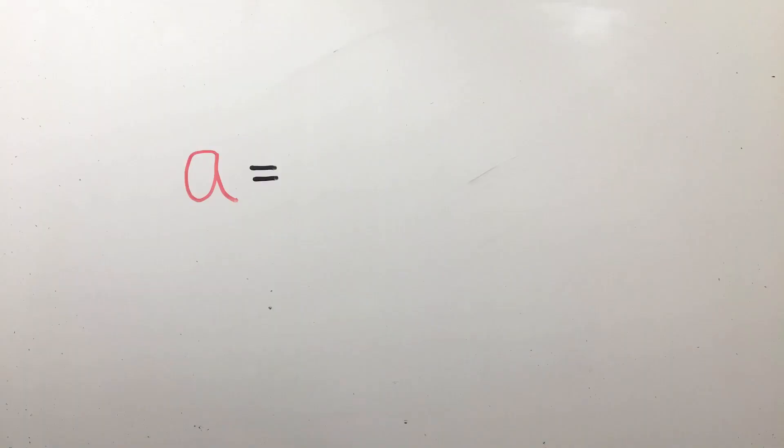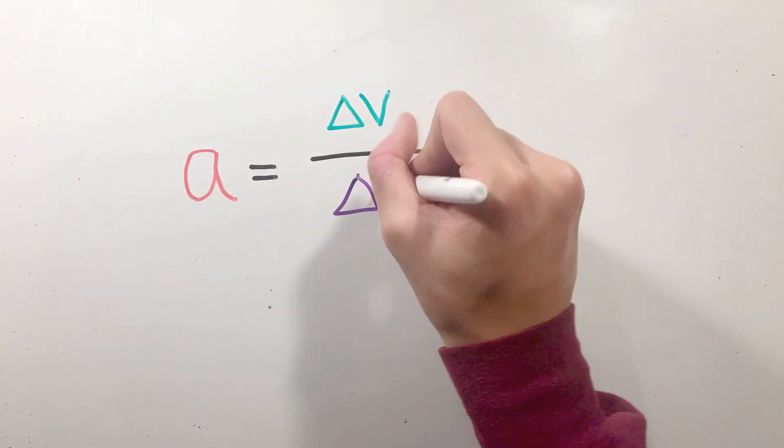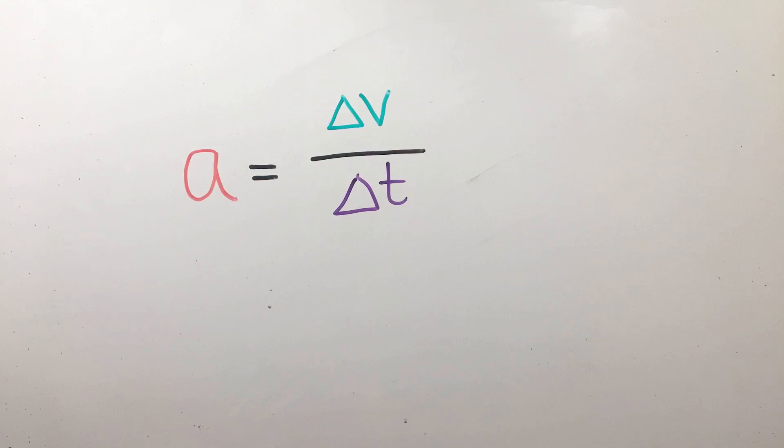Acceleration, written as the letter a, is defined as the change in velocity divided by the change in time, and it describes how fast you're either speeding up or slowing down.